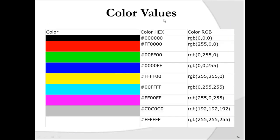A color chart shows hexadecimal and RGB representations. All zeros with a hash (#000000) gives black, and all Fs (#FFFFFF) gives white. In RGB, 0,0,0 is black and 255,255,255 is white. You can also give the color name directly—that is the best and recommended approach.